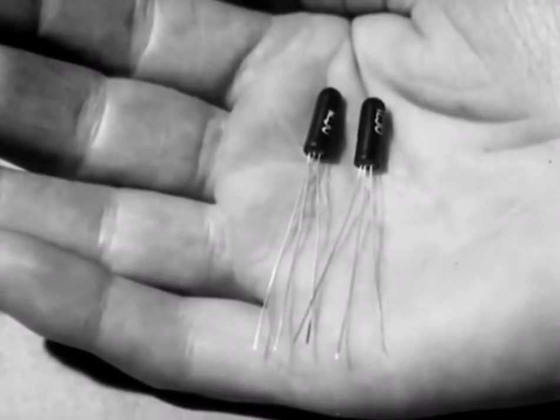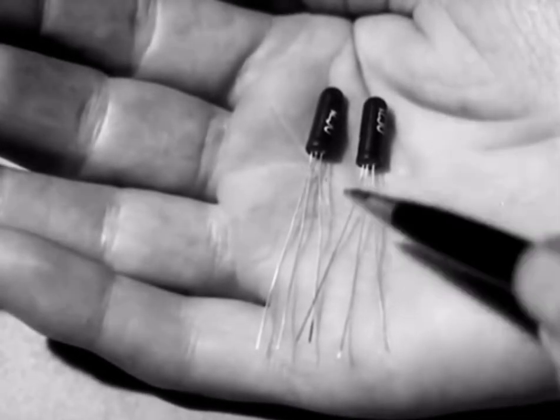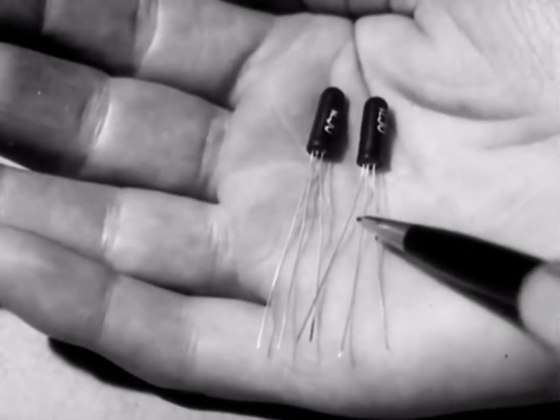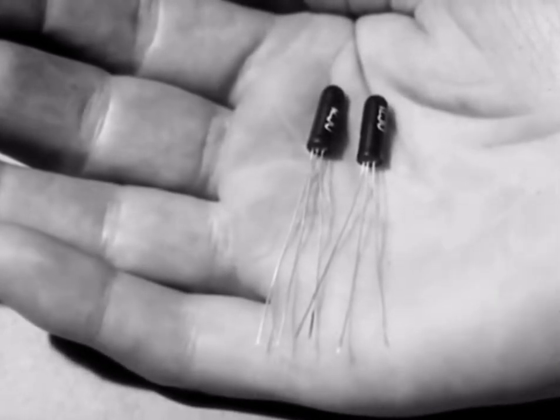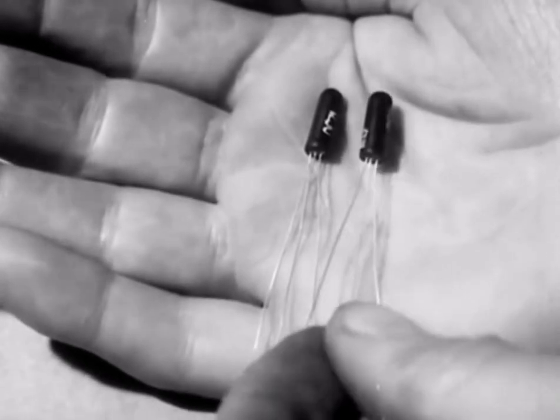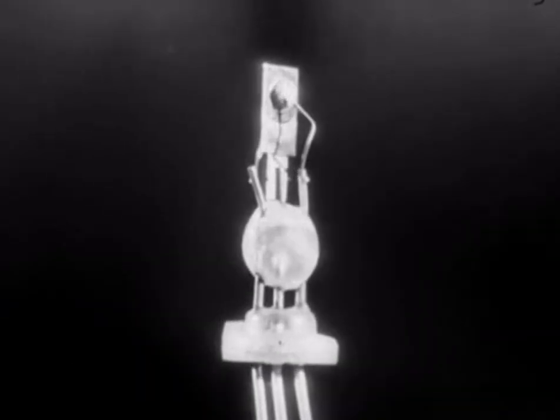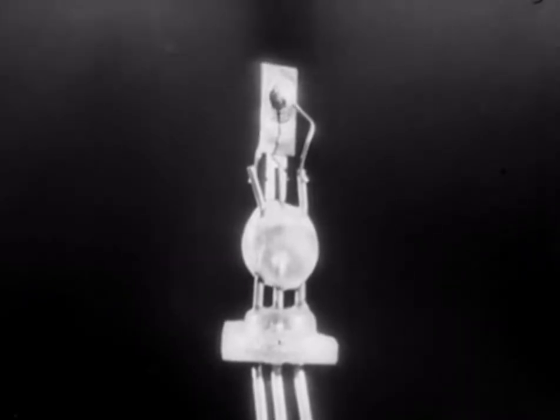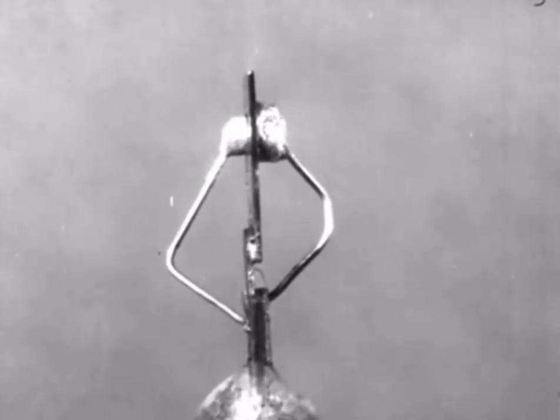Let us now look at some actual PNP germanium transistors. They are sealed in glass covers like the diodes. This lead goes to the emitter, this one to the base, and this one to the collector. With the cover removed, you can see the construction. There is a central strip of N-type germanium, and on the left, fused into it, is a small blob forming the emitter, and on the right, a larger blob forming the collector.